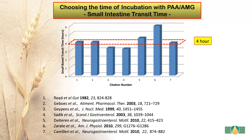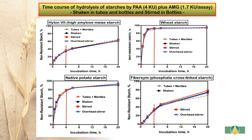The time of incubation with pancreatic alpha-amylase and amyloglucosidase is linked with the transit time through the small intestine. Numbers of publications have been reported in the literature and the time of transit seems to range between 3 and 5 hours. In our experimentation, we have decided to settle on 4 hours. In this slide, we see the time course of hydrolysis of various starches by pancreatic alpha-amylase, 4 kilounits, plus amyloglucosidase, 1.7 kilounits per assay.